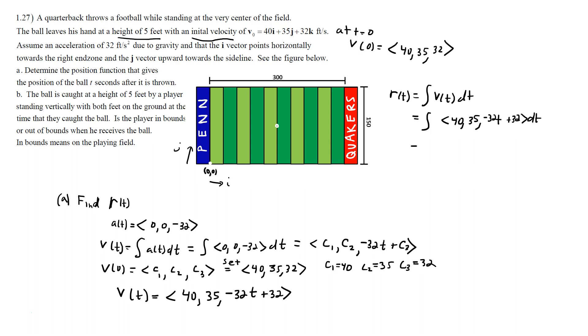And what we'll get out of that is 40T plus some random constant C4, 35T plus some random constant C5, then we'll get negative 16T squared plus 32T plus some constant C6. That's your position function.